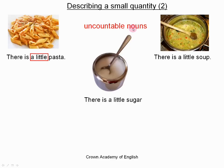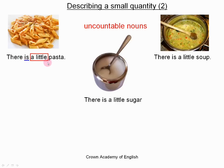So when we have an uncountable noun, we must only use 'a little.' We do not use 'a few.' And since an uncountable noun can only be singular, the verb is singular. So we say 'there is a little pasta' — not 'there are a little pasta.' And the noun stays in the singular form — there is no S. We never say 'pastas,' for example.